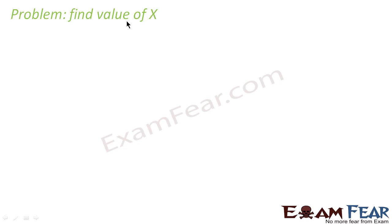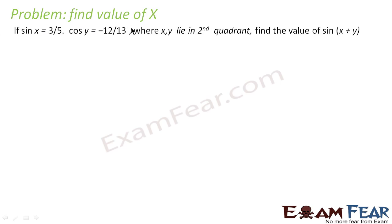Here we have to find the value of x. It says that sin x is equal to 3 by 5, cos y is equal to minus 12 by 13, where x and y lie in the second quadrant. We have to find the value of sin(x + y).